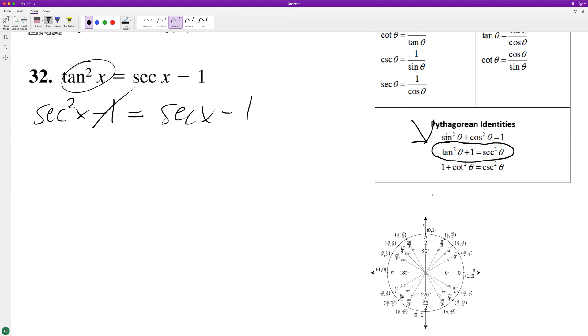So what we can do is get rid of the 1, so we're left with secant squared x equals secant x. This can become secant squared x minus secant x equals 0.